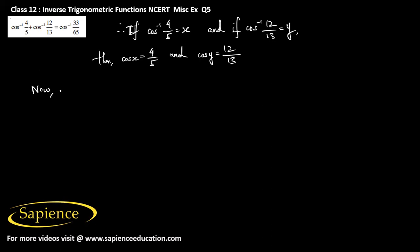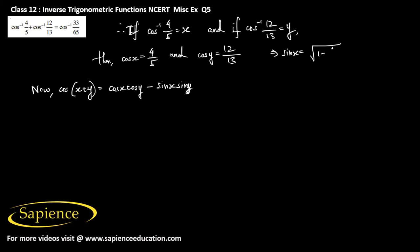We know that cos of x plus y equals cos x into cos y minus sin x into sin y. So from here we need to find the values of sin x and sin y. Therefore, sin x will be equal to square root of 1 minus cos squared x, which is 16 by 25, giving square root of 9 by 25, that is 3 by 5.